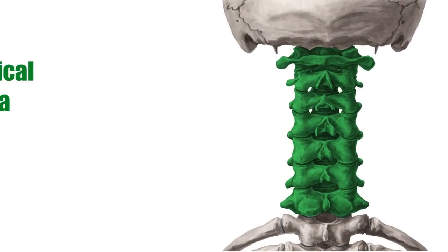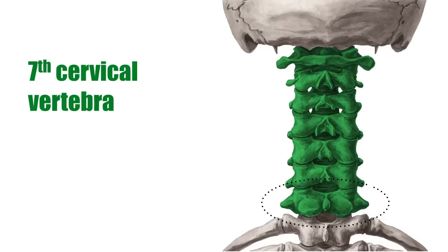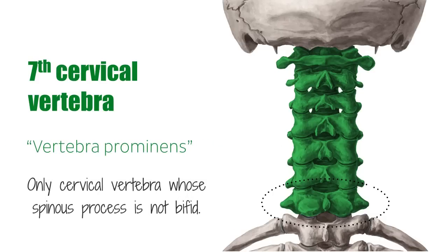Lastly, C7, which is also called the vertebra prominens, is the only cervical vertebra whose spinous process is not bifid. It is called the most prominent vertebra because its long spinous process protrudes from under the skin and is visible to the naked eye. It has a large transverse process like the atlas, which also holds the foramen transversarium, that encapsulates the vertebral veins, and occasionally the vertebral arteries.